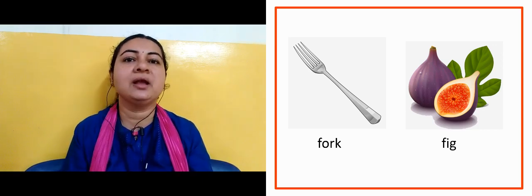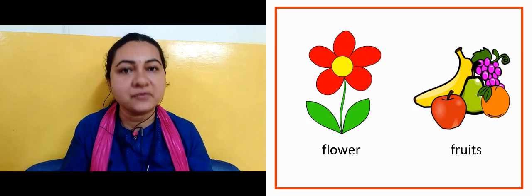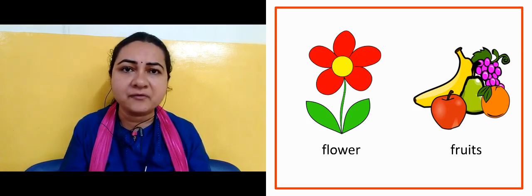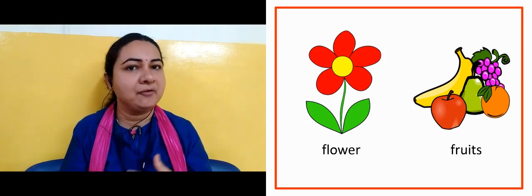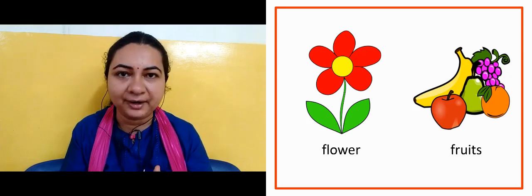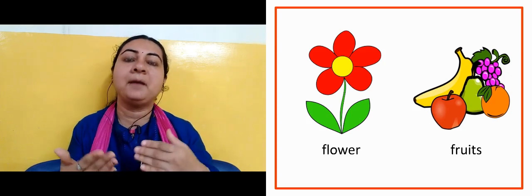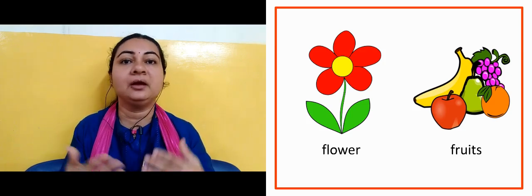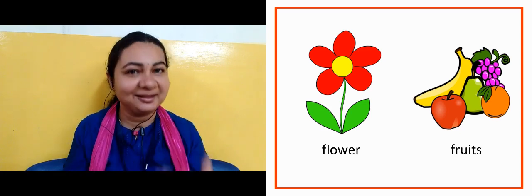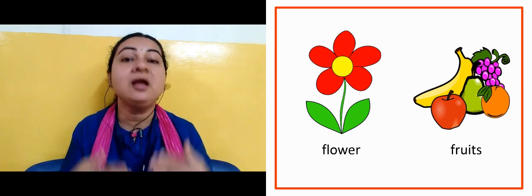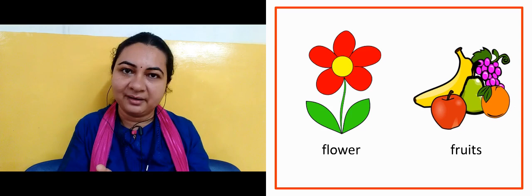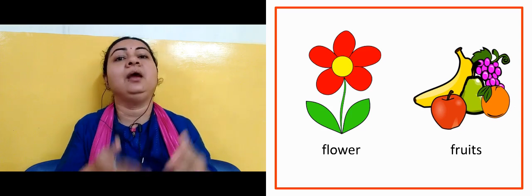Now the next slide is showing us flower. F for flower. How beautiful! We can have a plant with a flower in our house, and we can see these things in the garden too.